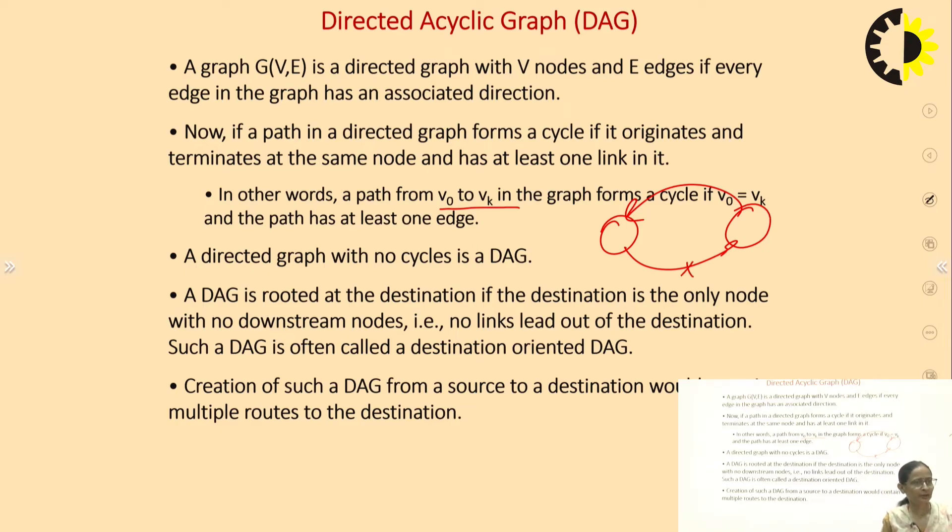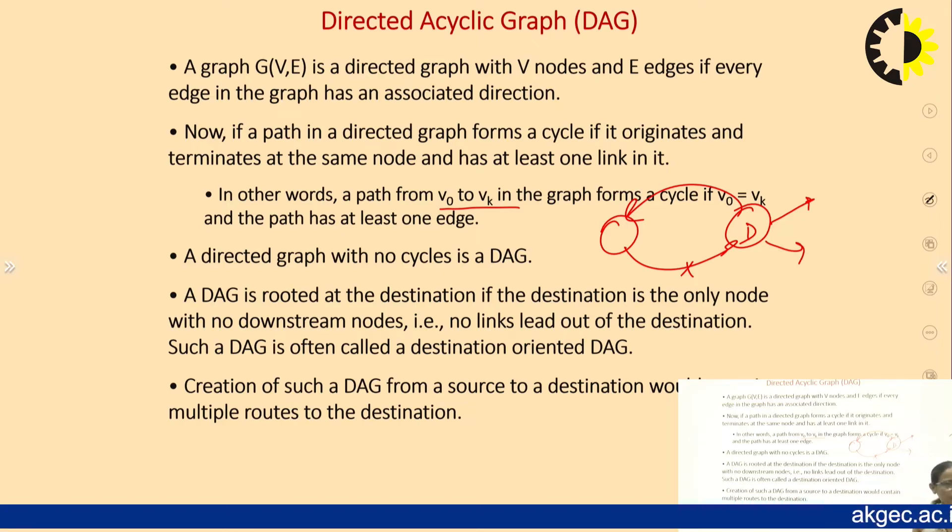A DAG is rooted at the destination if the destination is the only node with no downstream nodes, that is no links lead out of the destination. Such a DAG is often called the destination oriented DAG. From the destination, no link is coming out of it. This is your destination oriented DAG. Creation of such a DAG from source to destination would contain multiple routes to the destination.